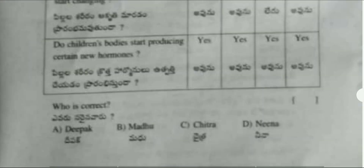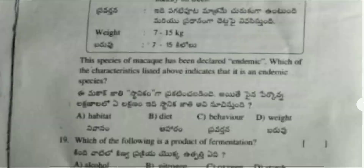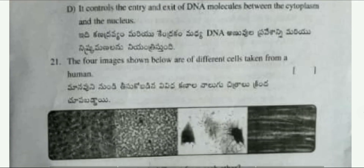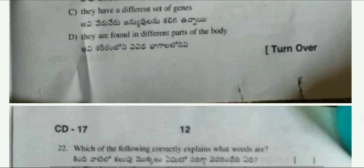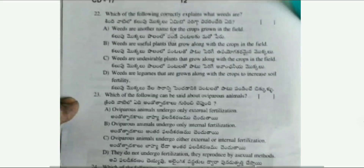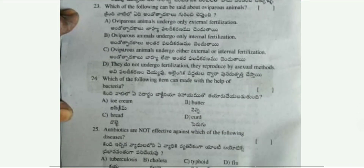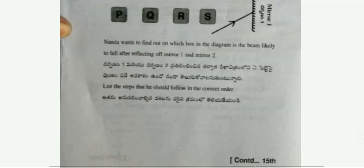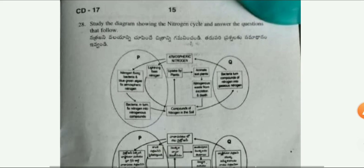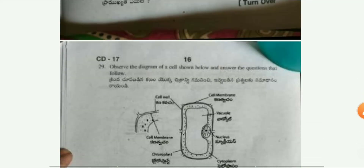You can see questions 18 and 19. Then questions 20, 21, 22, 24, 25, 26, 27, and 28. Complete all of these questions in your question paper.